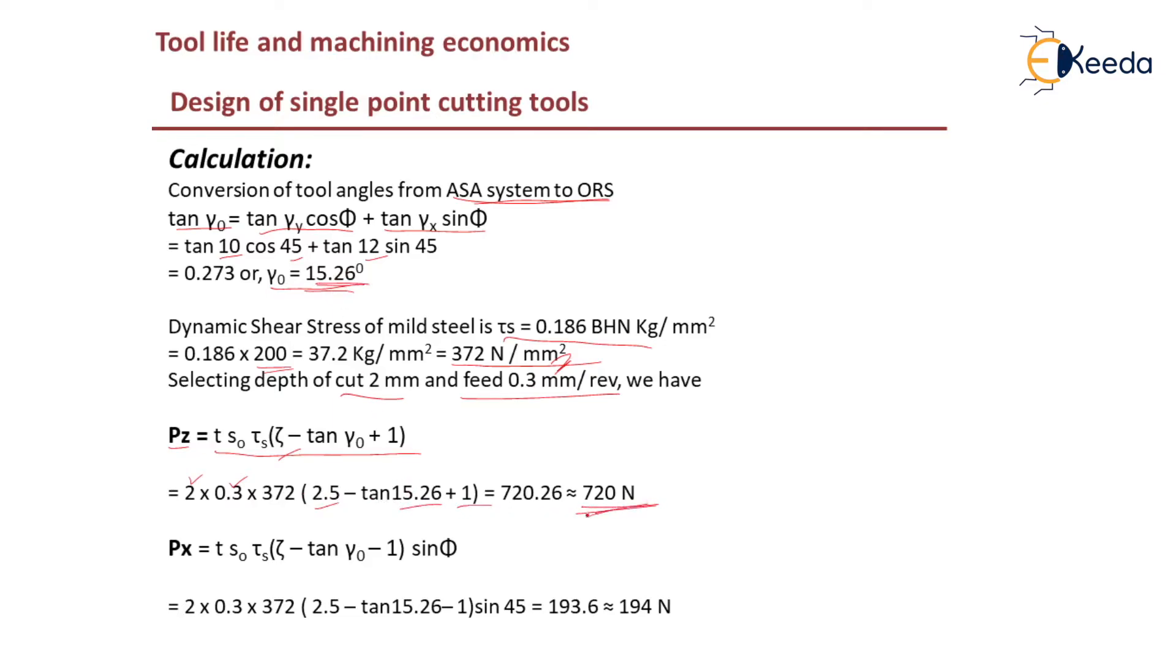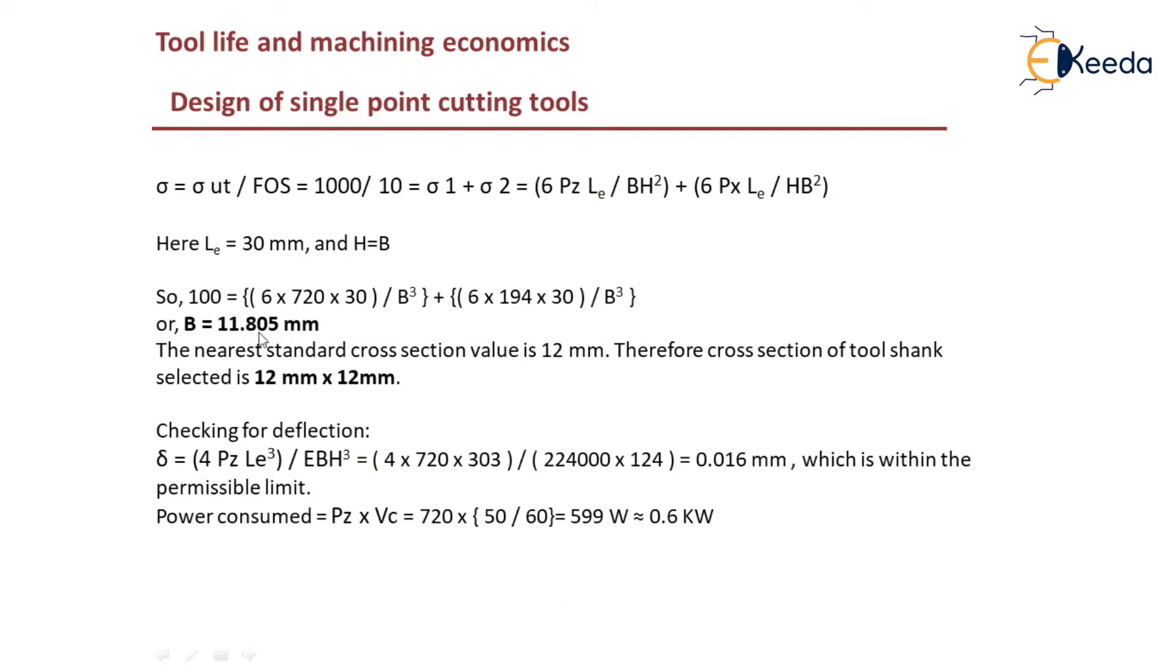Px, that is force in x direction, is given by t s naught tau s times chip reduction coefficient minus tan gamma naught minus 1 times sin phi. If you substitute, you will get 194 Newtons. So this is the forces in z and x direction.